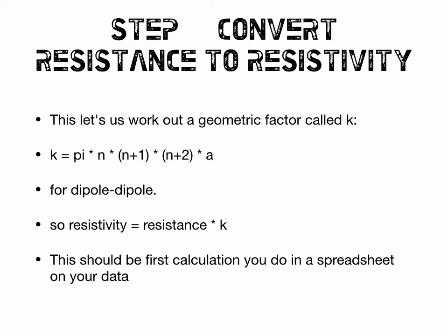And that factor that we use to convert from resistance to resistivity is called the geometric factor, also called K. The formula for K for a dipole-dipole survey is given right here. It's just pi times n.